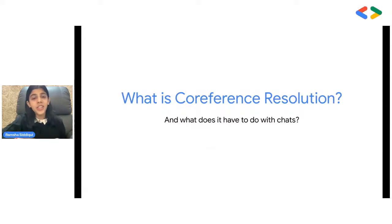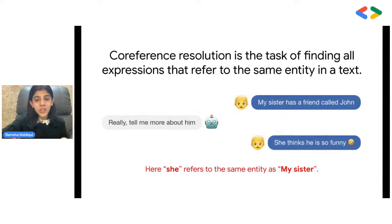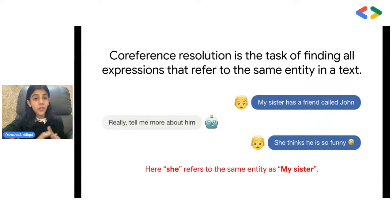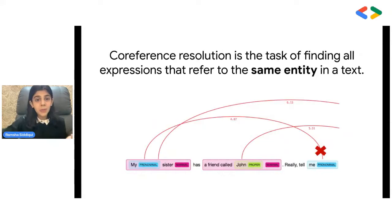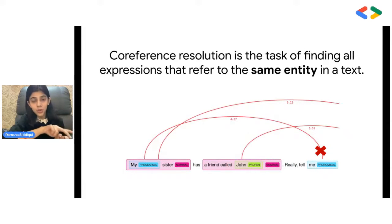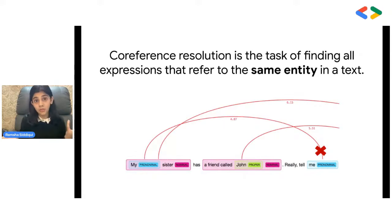Coreference resolution is the task — commonly achieved through machine learning — of finding all expressions in a text that refer to the same entity. For example, in this chat, 'she' in the third message is referring to the user's sister mentioned in the first message. Similarly, 'my' in 'my sister' in the first message is not a reference to 'me' in the second message by the bot, because these are different speakers.